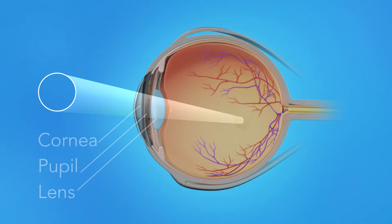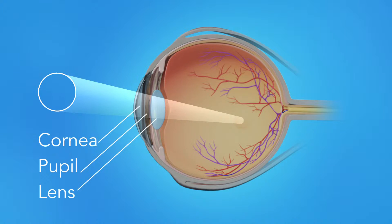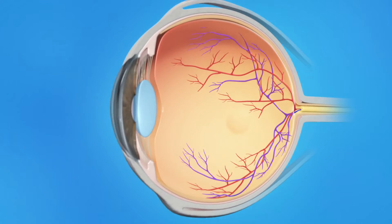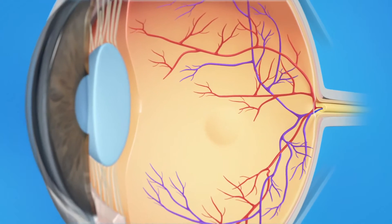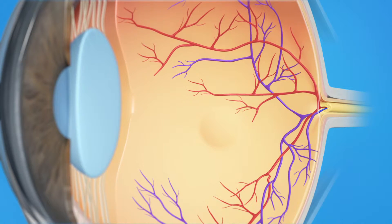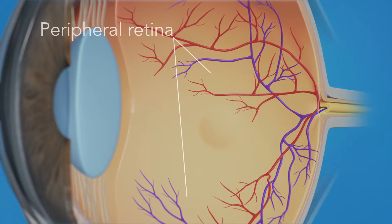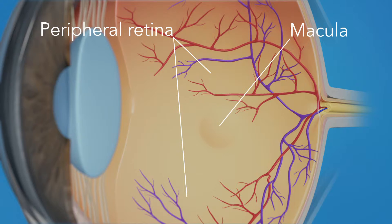Light rays enter the eye through the cornea, pupil, and lens. These light rays are focused on the retina, the light-sensitive tissue lining the back of the eye. The retina has two areas: the peripheral retina, which gives us our side or wide-angle vision, and the macula, the small area at the center of the retina. The macula gives us our pinpoint vision, allowing us to see detail clearly.